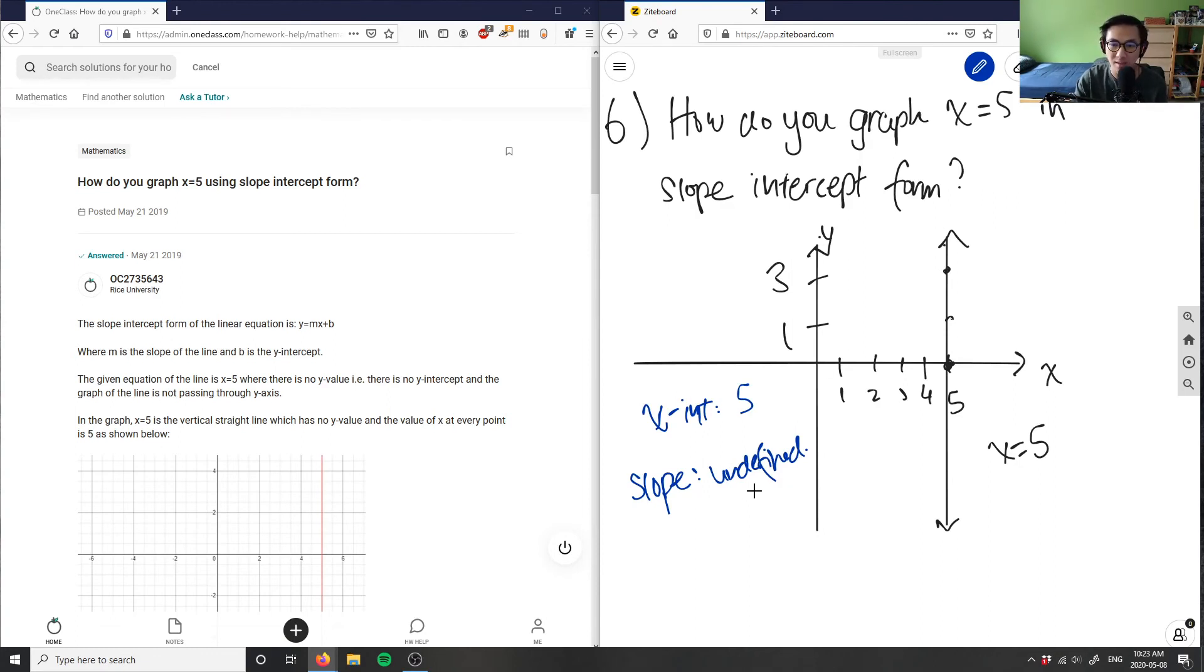It's a lot better to use that word. Let's just say that this here is undefined. Slope here is undefined because it's a vertical line here.